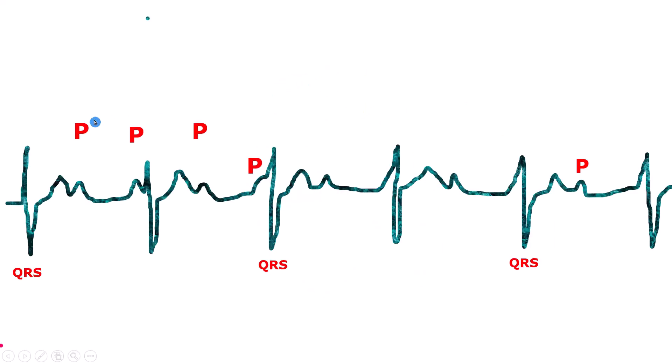In the setting of complete heart block, AV dissociation almost always produces more P waves than QRS complexes. AV dissociative rhythm is not unique to complete heart block. For example, complete heart block may also occur in patients whose basic atrial rhythm is flutter or fibrillation.